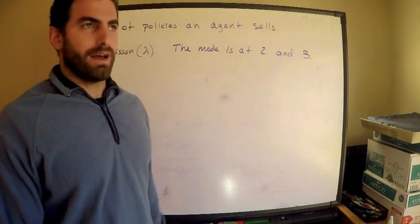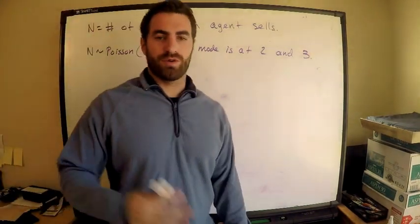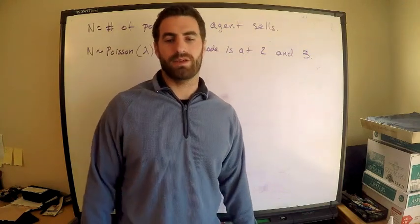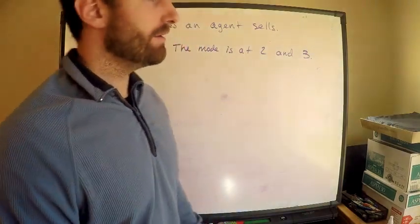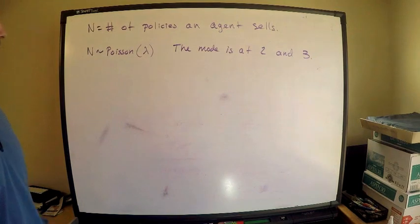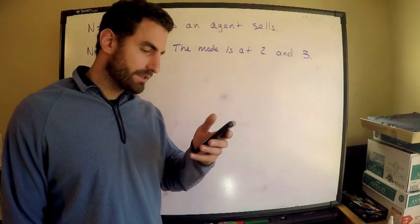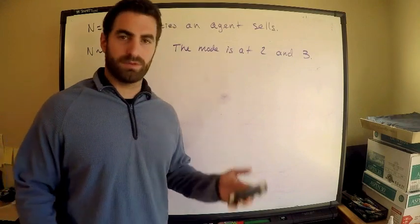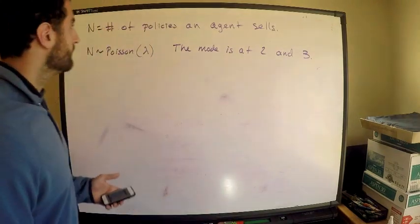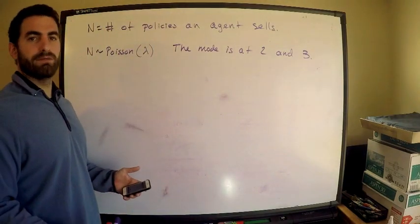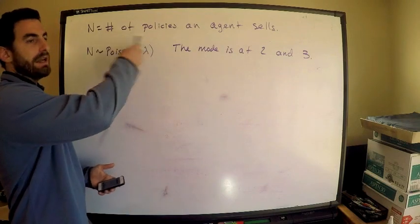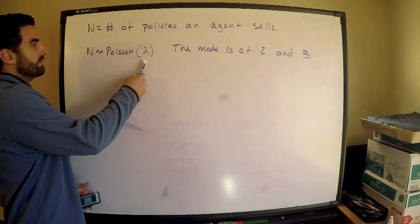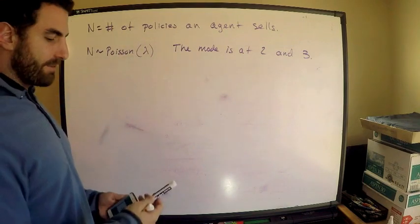All right, as per request, I'm going to cover this video from the SOA problems for exam P. Here are the details we have. Just looking at the question: the number of policies in agent cells is Poisson distribution. So immediately write down the random variable — it's discrete. N is the number of policies in agent cells. It's Poisson. We don't know lambda, but we're given this information.